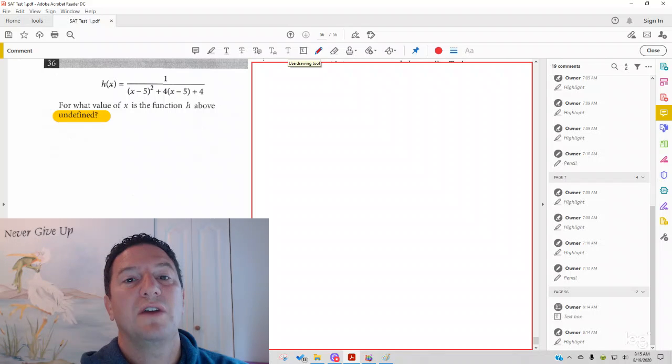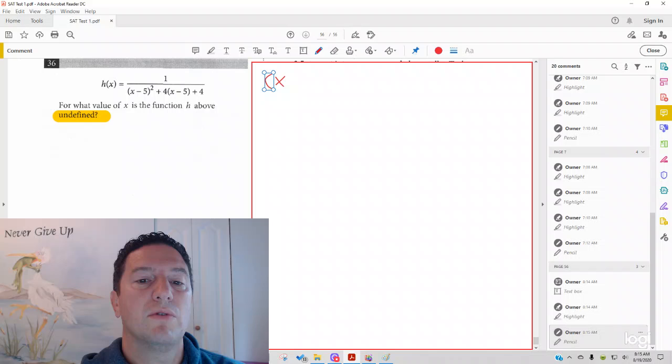How do you go about solving this? You would actually have to set the bottom equal to 0 to find the x that's going to make the bottom 0. So x minus 5 quantity squared. Another way to write that is x minus 5 times x minus 5.